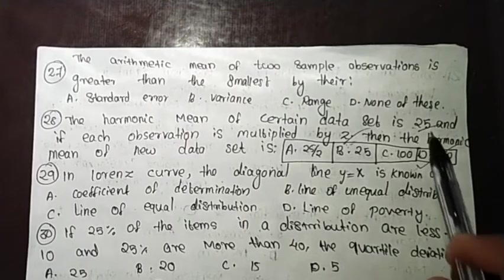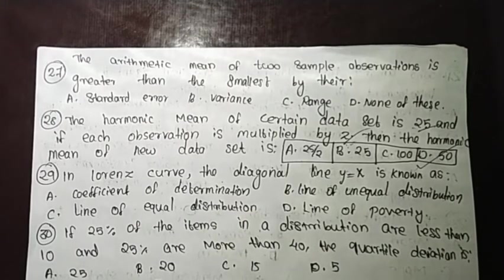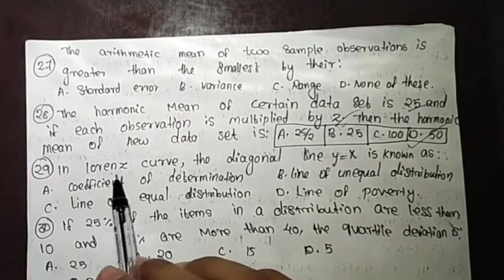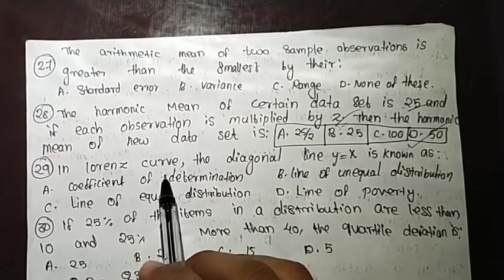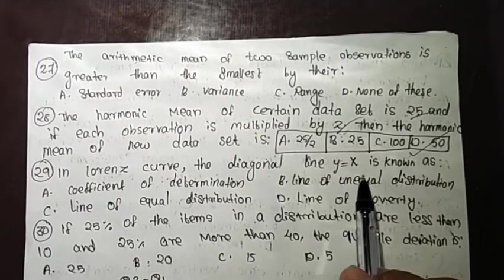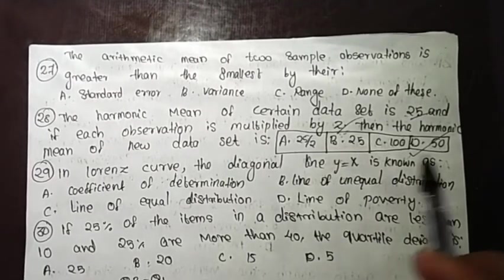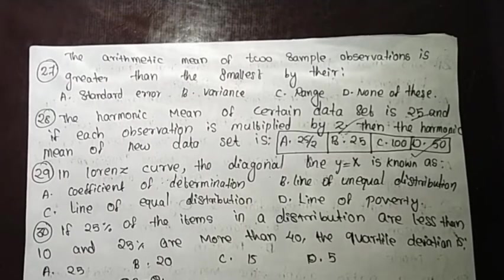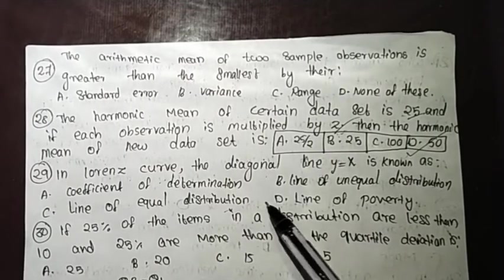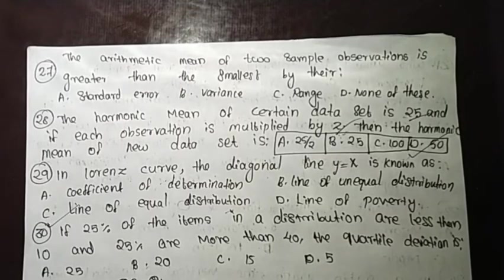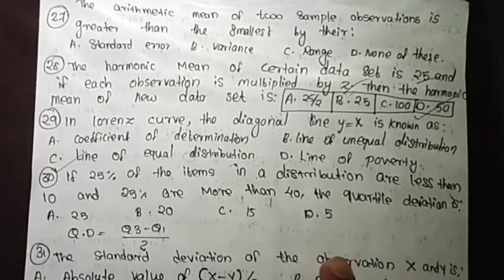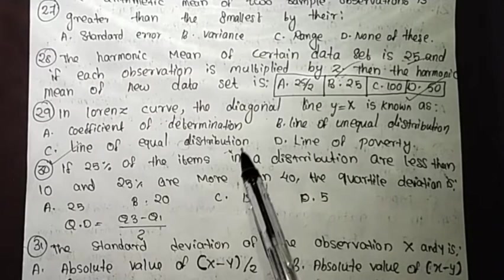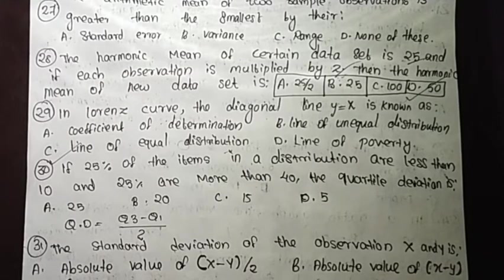In a Lorenz curve, the diagonal line y equal to x is known as the line of equal distribution. That is Answer C.